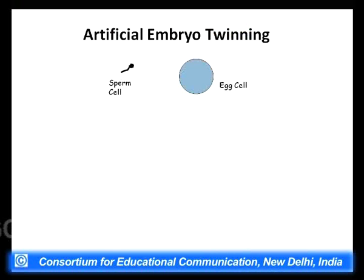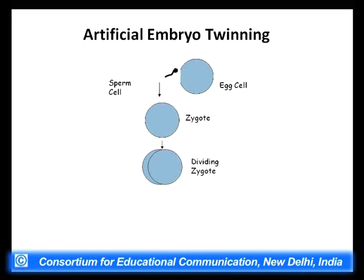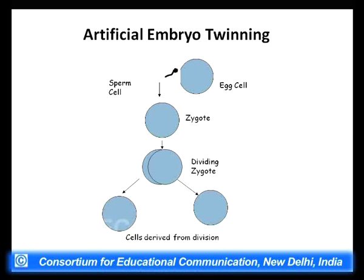In artificial embryo twinning, a sperm cell fertilizes an egg cell to form a zygote with a 2n number of chromosomes, which then divides. At the two-cell stage of this dividing zygote, we separate the two cells, put them into two surrogate mothers, and get two embryos and finally two organisms that are exactly similar because they come from the same zygote. We are artificially making a clone of the embryo. This process also occurs in nature, but here we do it in laboratory conditions.